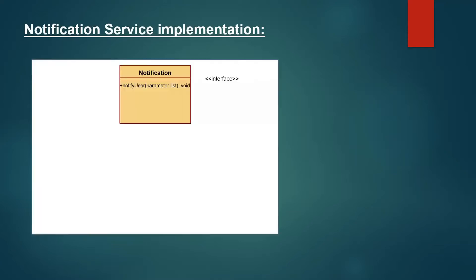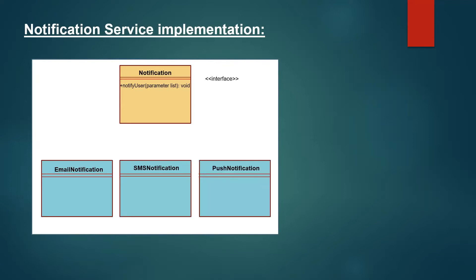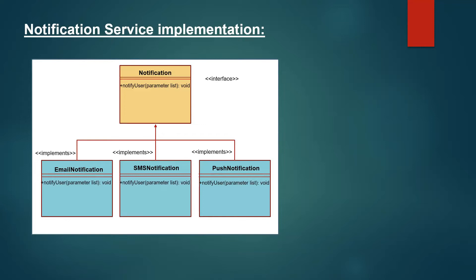Let's see how to implement this. First, we are going to define an interface called Notification, and we are going to have a factory method named notifyUser which returns nothing. Then we will have concrete subclasses: one class for email notification, one for SMS notification, and another for push notification. These classes will implement the Notification interface and provide the definition for the factory method.